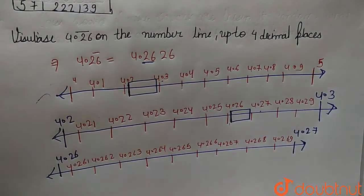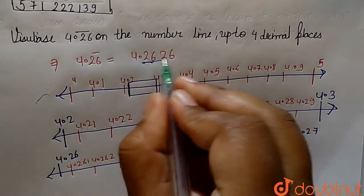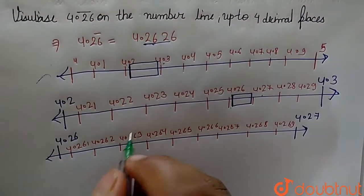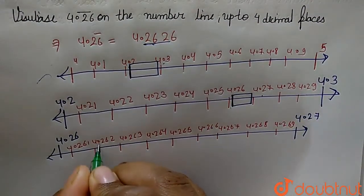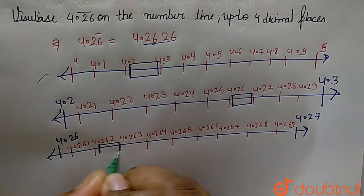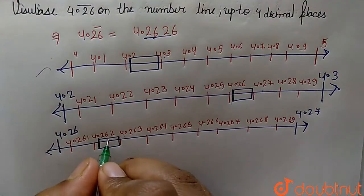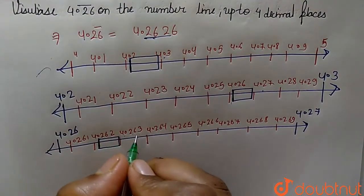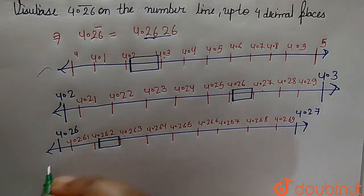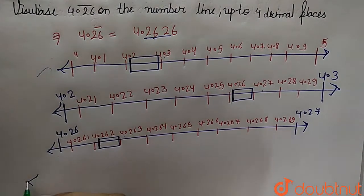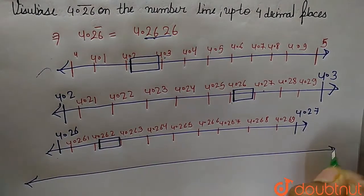The next decimal place gives us 4.262, so 4.262 will come between 4.262 and 4.263. Now again we will draw a number line from 4.262 to 4.263.